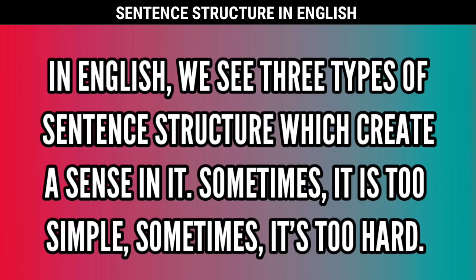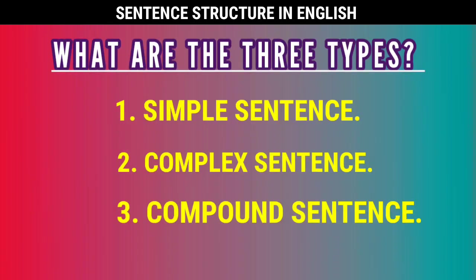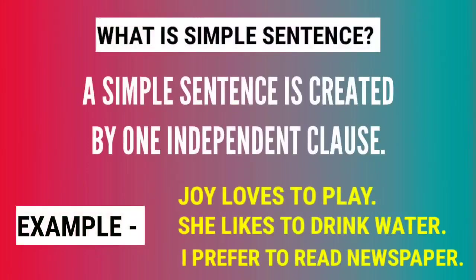The three types are: first, simple sentence; second, complex sentence; and third, compound sentence. So what is a simple sentence and what does it mean? A simple sentence is created by one independent clause — it means a simple sentence doesn't need another sentence to complete its meaning.